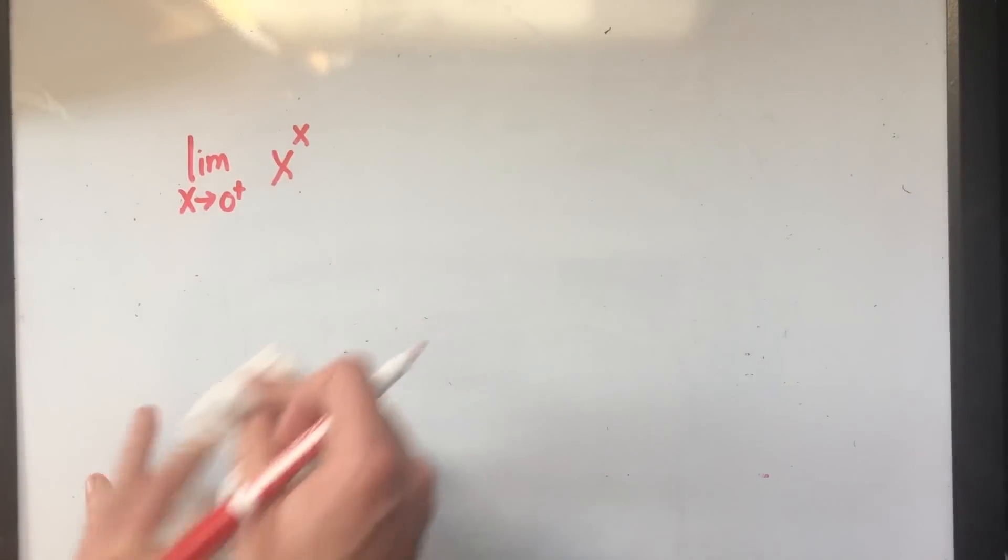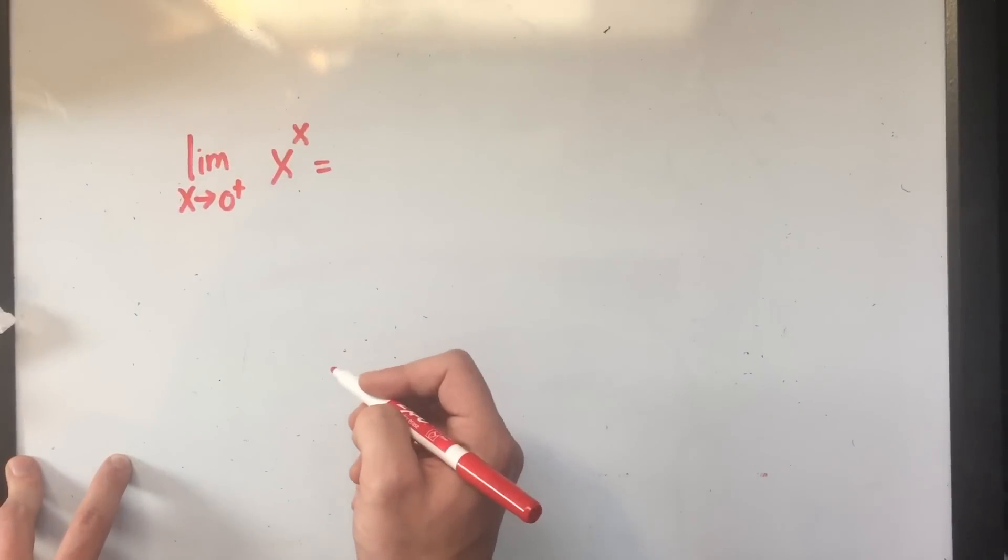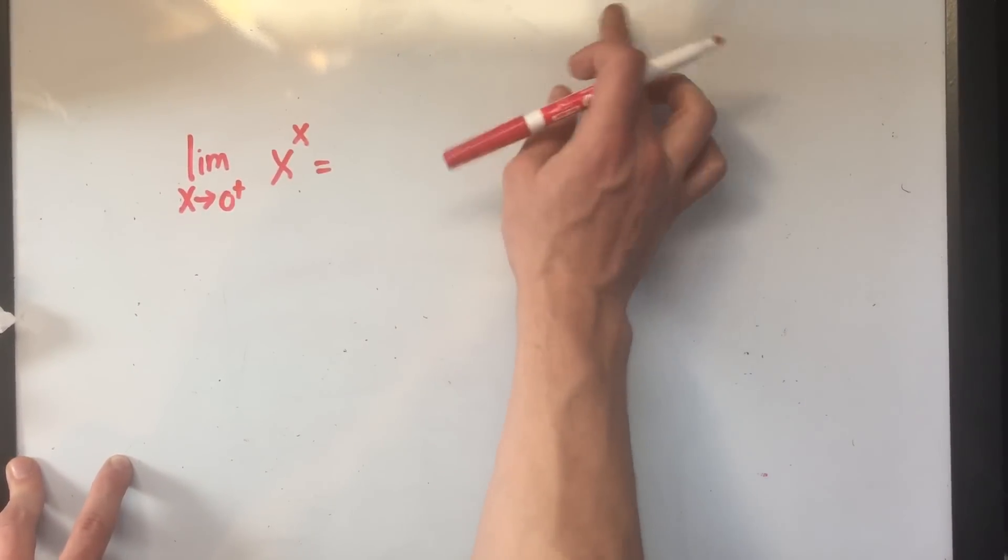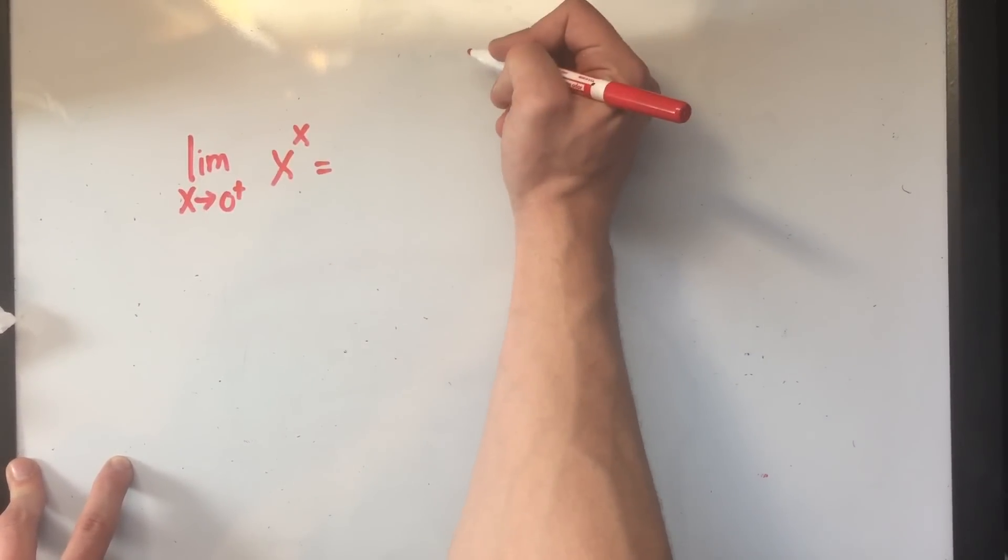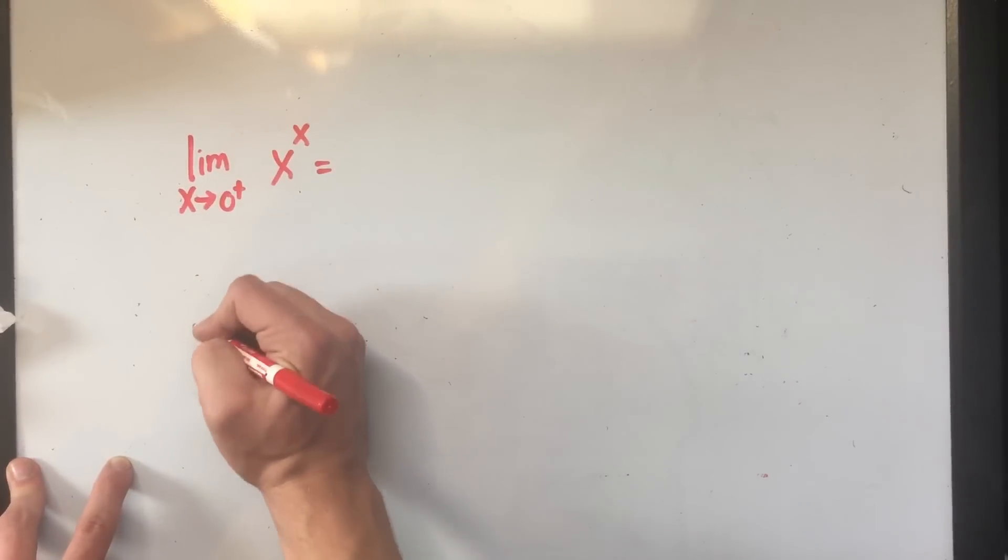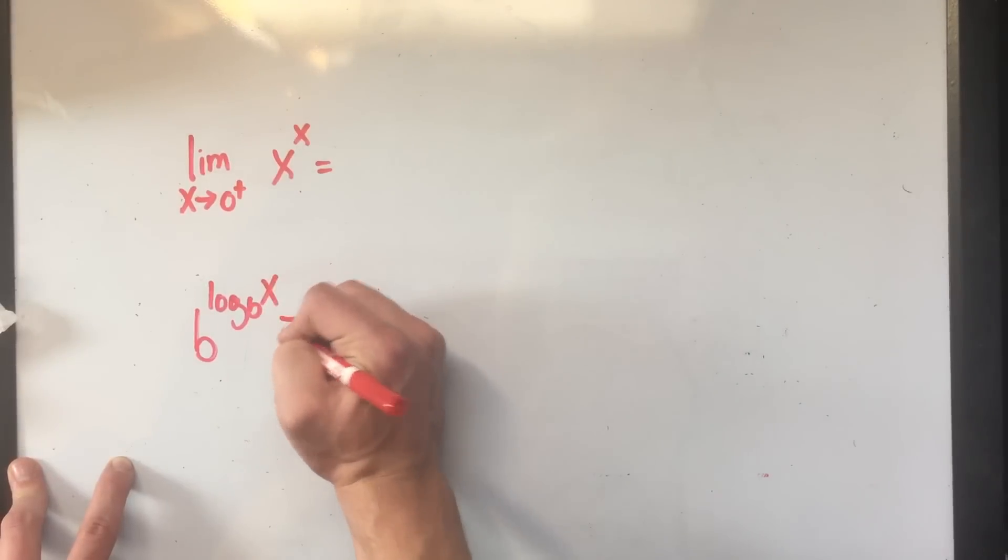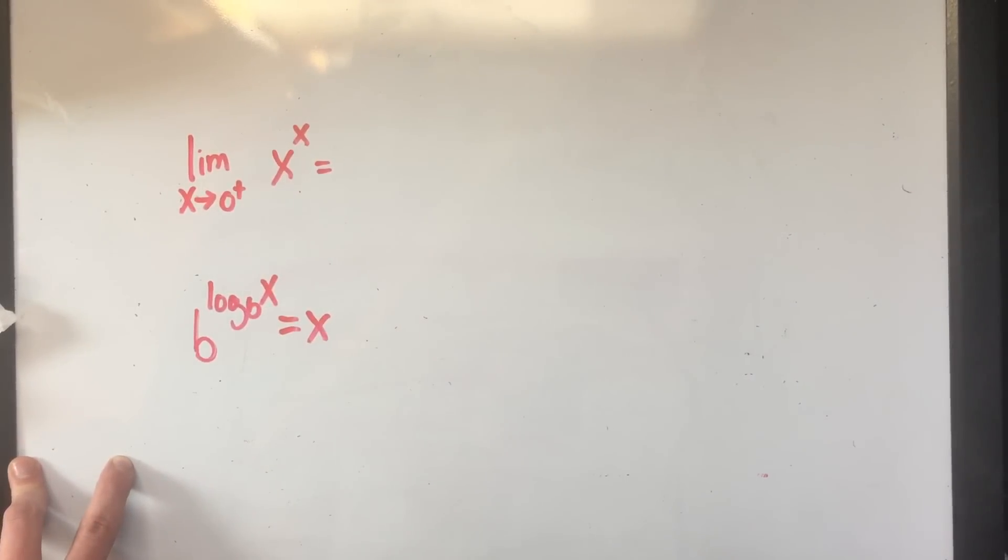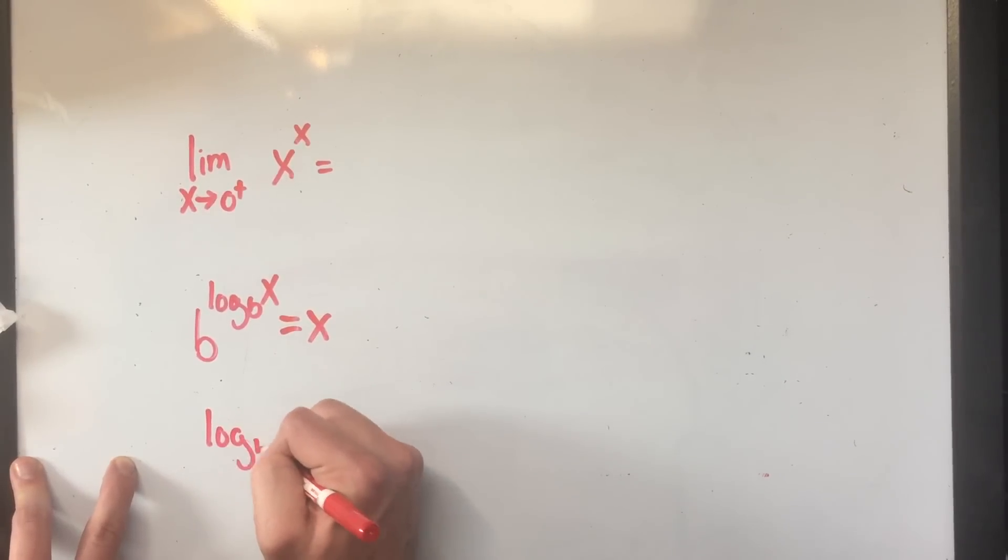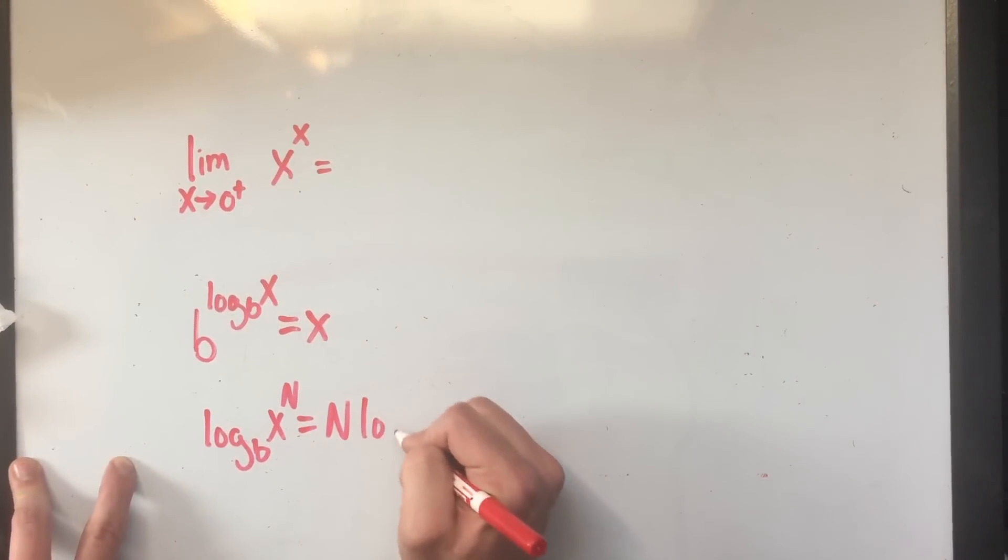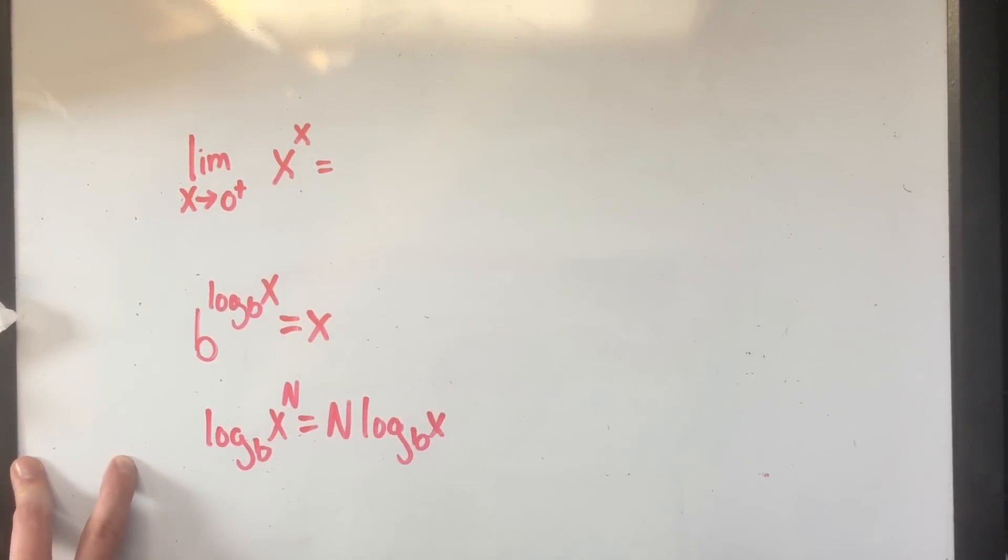So what I'm going to do is I'm going to do a trick, basically. I'll have you remember a nice property of logarithm that says b to the log base b of x is x. And we're also going to use that log base b of x to the n power is n times log base b of x. So I'm going to use these two properties.